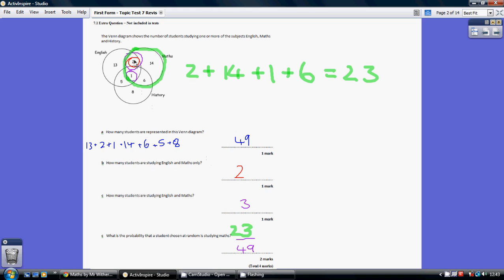So here is the English circle, here is the maths circle. We have the 2 and the 1 in both circles, but obviously this 1 is also in the history circle.